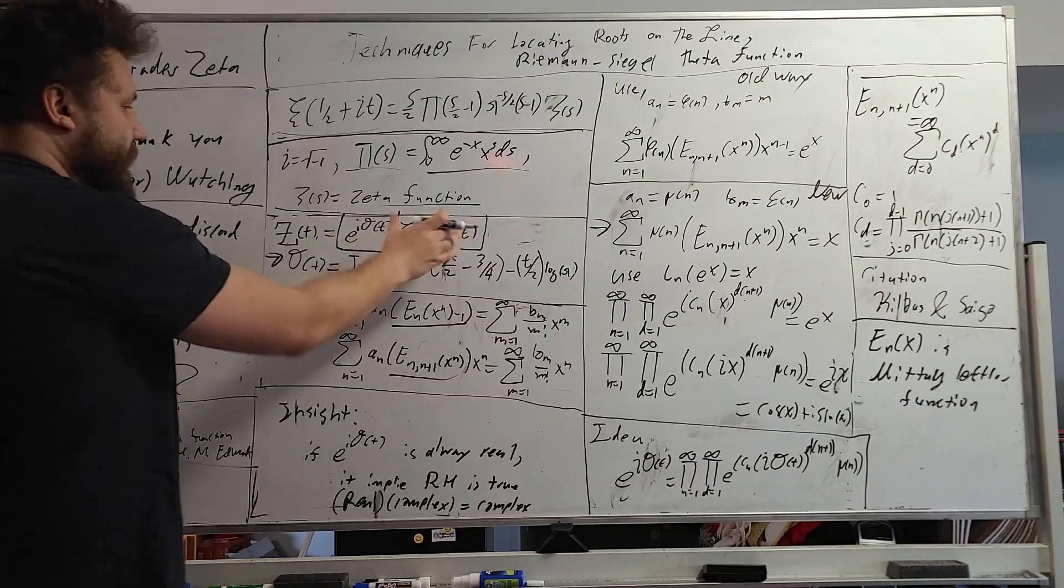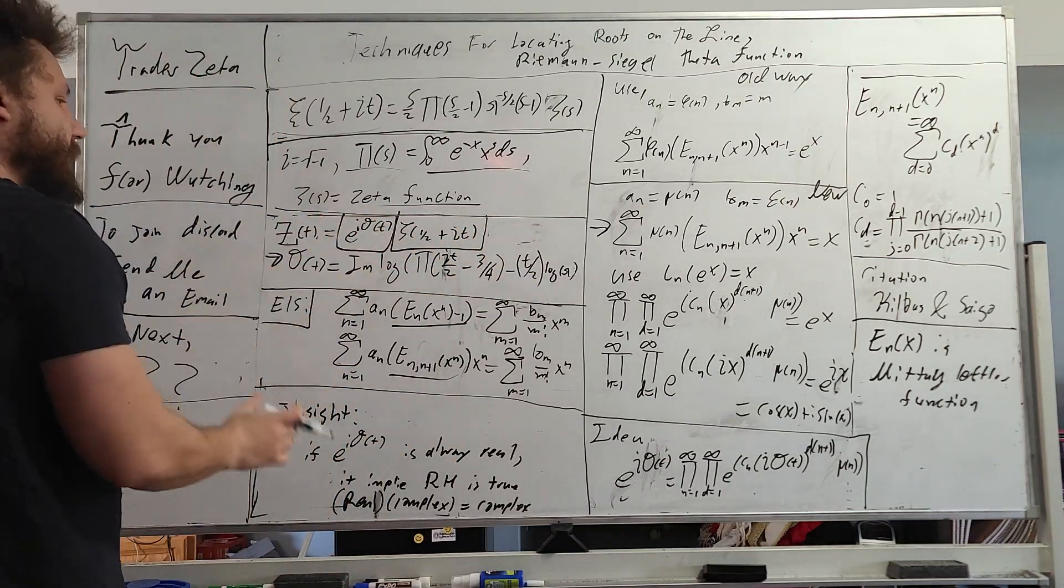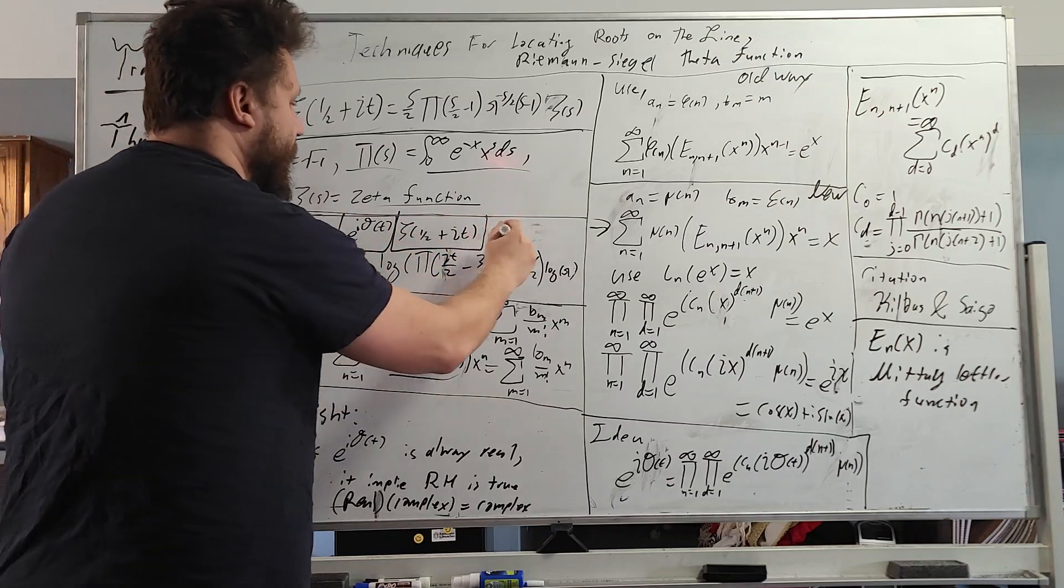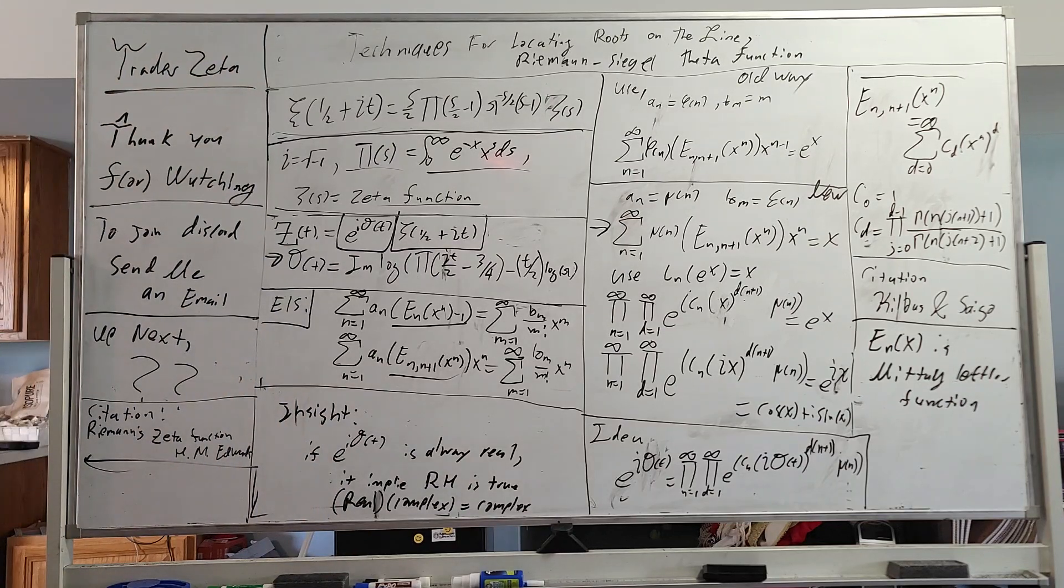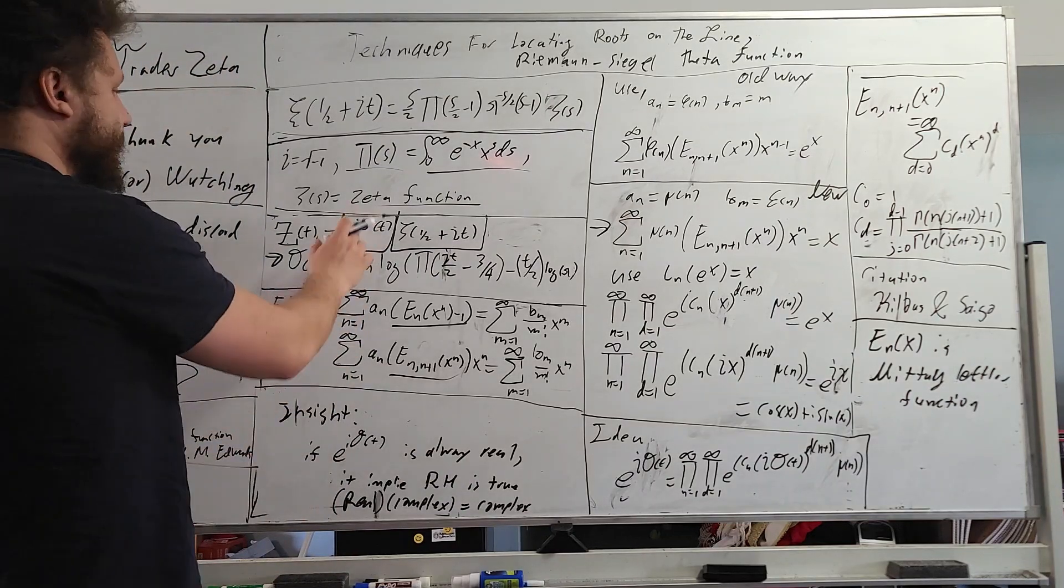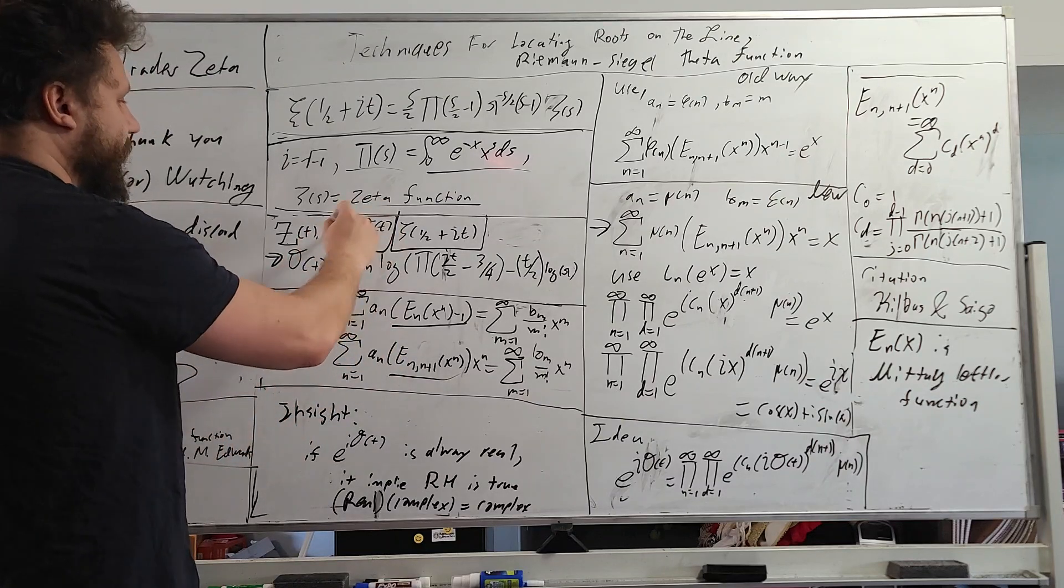So you multiply them out, a real times a complex equals complex. However, if this is complex, this is complex, this will go to the reals, and we can't really do that. We can't have that, so we can investigate the Riemann hypothesis in terms of this right here.